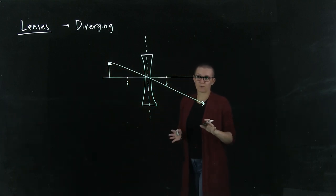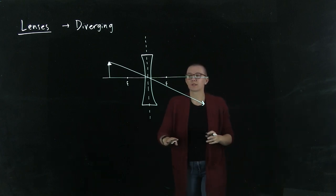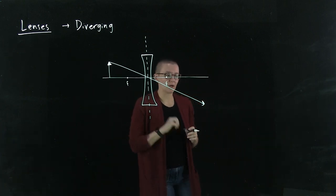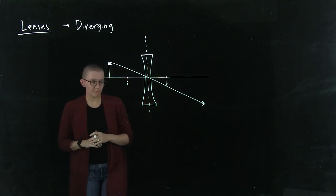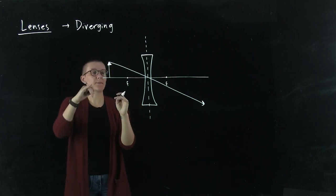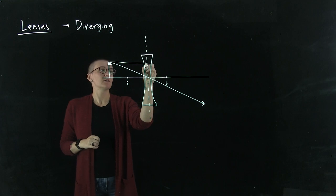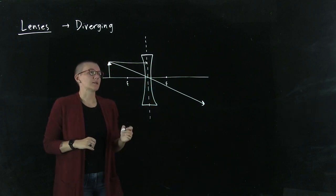Our next ray is going to be a little bit interesting. We're going to work with this focal point here on this side. What we're going to do is send in a ray parallel to this axis here, just like that.